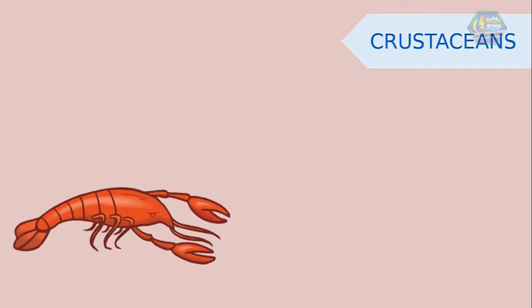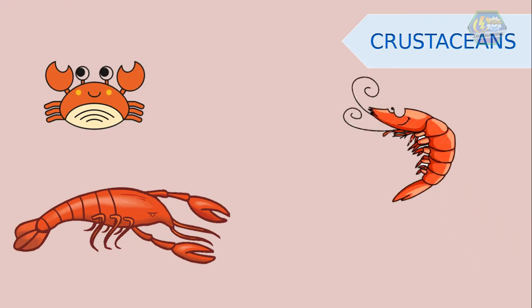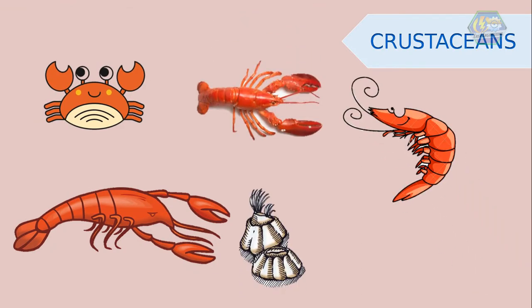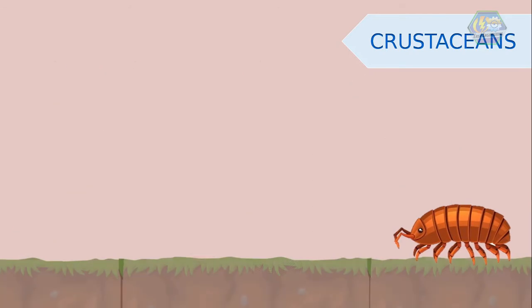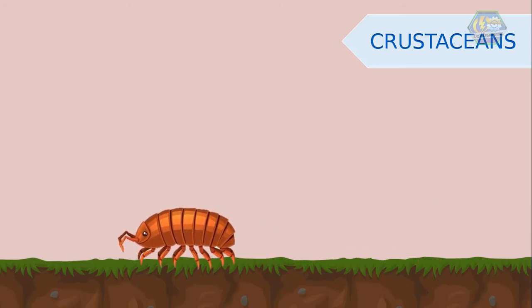Next is the crustaceans. You may know them because they are delicious seafood. They are the aquatic arthropods that include lobsters, crabs, shrimp, crayfish, barnacles, and the odd one out, wood lice, also known as pill bugs. Unlike their aquatic cousins, wood lice live mostly on dry land.